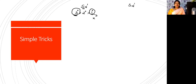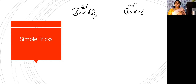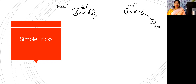Coming to SN2, what is that order? Primary greater than secondary greater than tertiary. If it is a primary alcohol, it undergoes SN2. There is no SN2 reaction when it is tertiary — tertiary, no SN2 reaction. This is trick number one. This order you have to remember: 3-2-1 for SN1 and 1-2-3 for SN2.